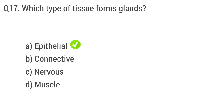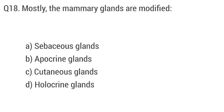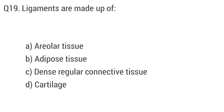Question 17: Which type of tissue forms glands? The right answer is option A: epithelial tissue. Question 18: Which type of tissue forms glands? The right answer is option B: exocrine glands. Question 19: Ligaments are made up of? The right answer is option C: dense regular connective tissue.